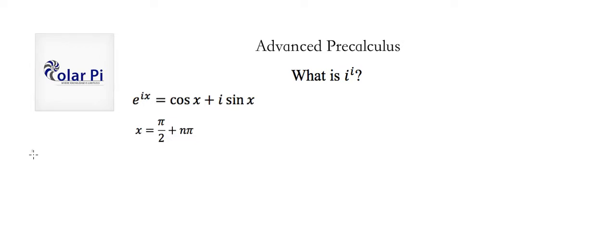And so some of these radian values are like π over 2 when n is equal to 0, and then 5π over 2 when n is 1, 9π over 2 when n is 2, and so on.